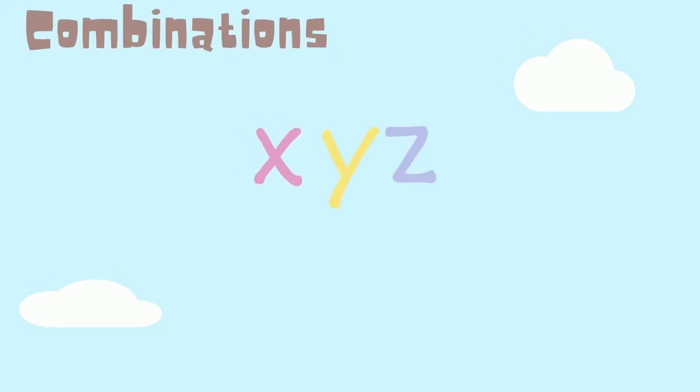When letters are next to each other it means they are multiplied together, but the multiplication symbol is left out to make it simpler.